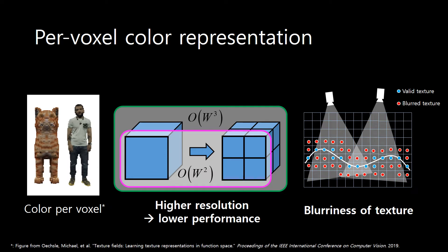The traditional online scanning methods have used per-voxel color representation to store texture information. However, the color quality is bounded by the voxel resolution, and also the stored texture has been blurred by the geometric discordance.